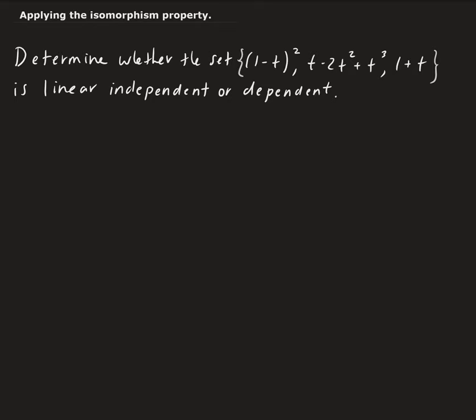The way we're going to do this is we're going to apply the isomorphism property. We're going to map each polynomial into a vector, and then from there we can create a matrix composed of those vectors and then do a REF on it. From there we can determine whether or not this set is linearly independent or dependent.